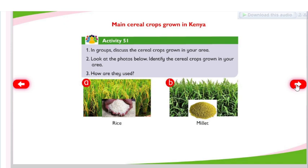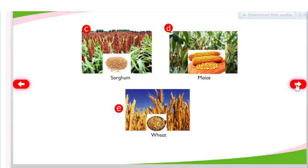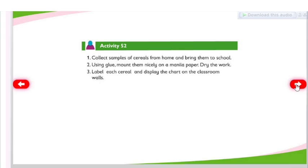Cereal crops grown in Kenya include rice, millet, sorghum, maize, and wheat. Activity 52: Collect samples of cereals from home and bring them to school. Using glue, mount them nicely on a manila paper. Dry the work. Label each cereal and display the chart on the classroom walls.